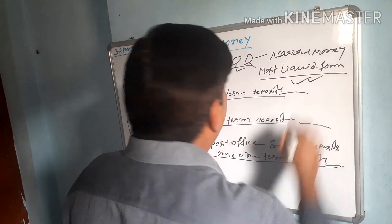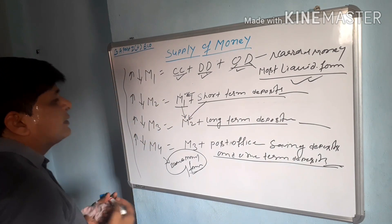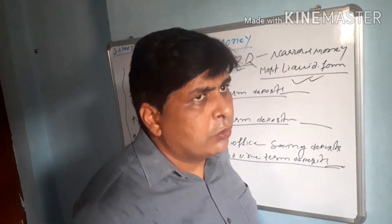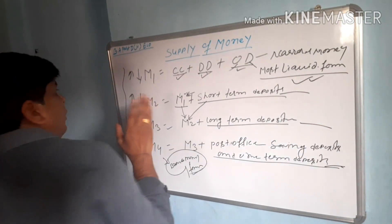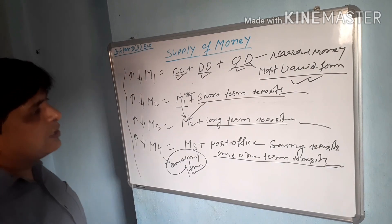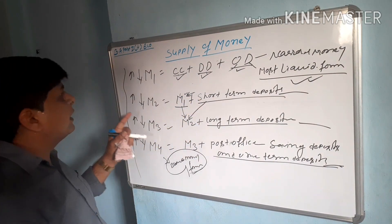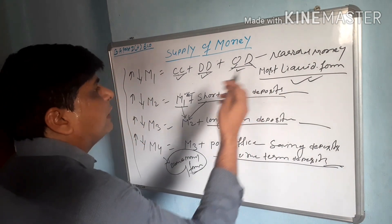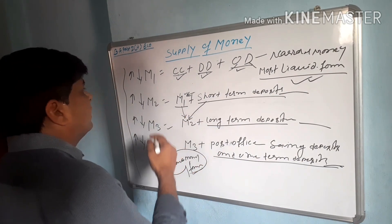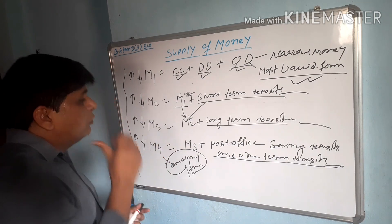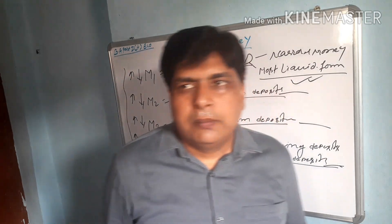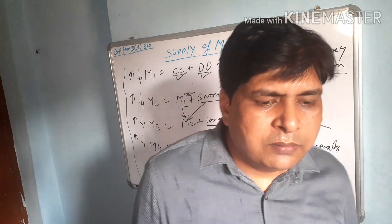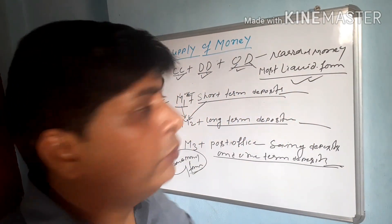Supply of money का यह एक important form है। Examination में यह topic बहुत beneficial है — short notes में 10 number के questions आते हैं। इस तरह का equation बनाकर सब चीज़ें discuss करने पर marks अच्छे आते हैं। Most liquid form क्या होता है, narrow money क्या होता है — यह सब हमने discuss किया। Hope this topic is very beneficial for the coming examination for BA Part 2 Economics Honours. Thanks.